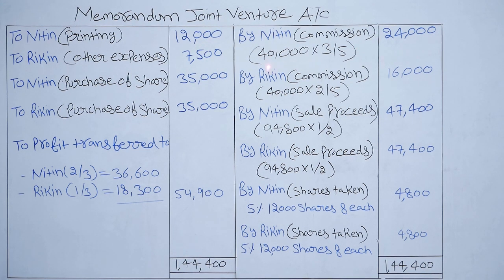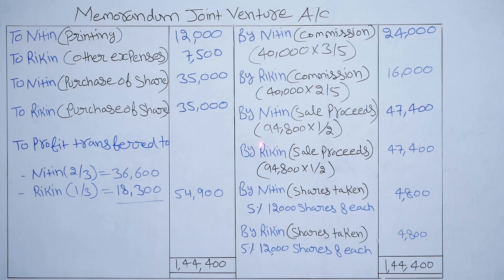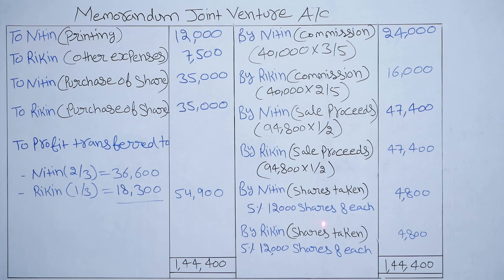Credit entries from Nitin's and Rikin's accounts: By Nitin — Commission Rs 24,000 (40,000 × 3/5); By Rikin — Commission Rs 16,000 (40,000 × 2/5). Total commission Rs 40,000 distributed in 3:2. By Nitin — Sale Proceeds: 94,800 × 1/2 = Rs 47,400; By Rikin — Sale Proceeds Rs 47,400. By Nitin — Shares Taken: 12,000 × 5% × Rs 8 = Rs 4,800; By Rikin — Shares Taken: 12,000 × 5% × Rs 8 = Rs 4,800.